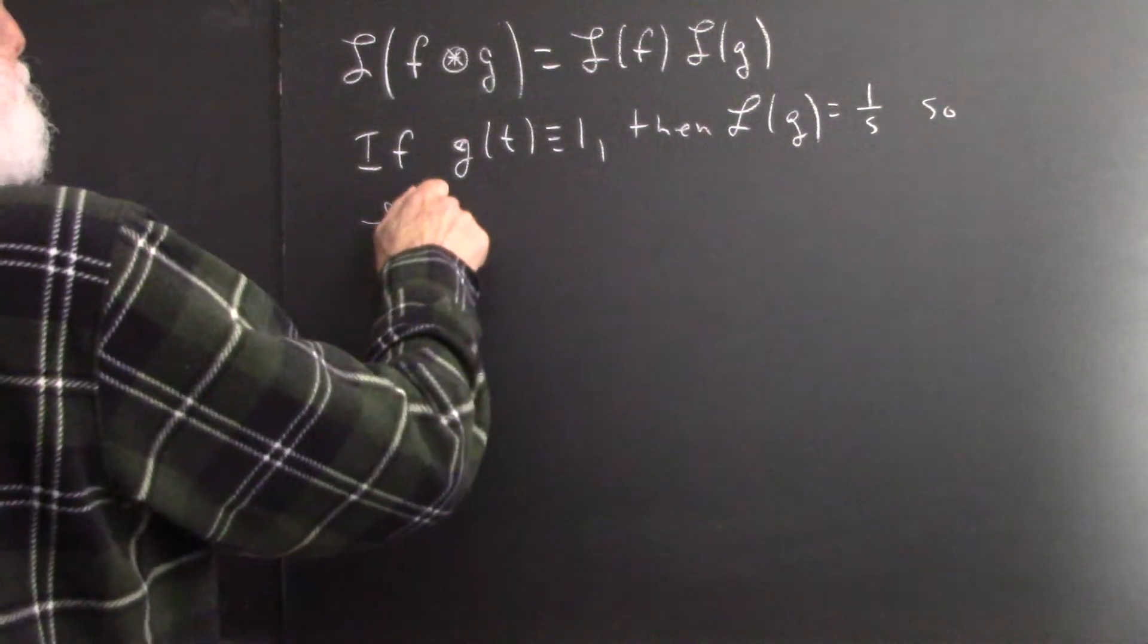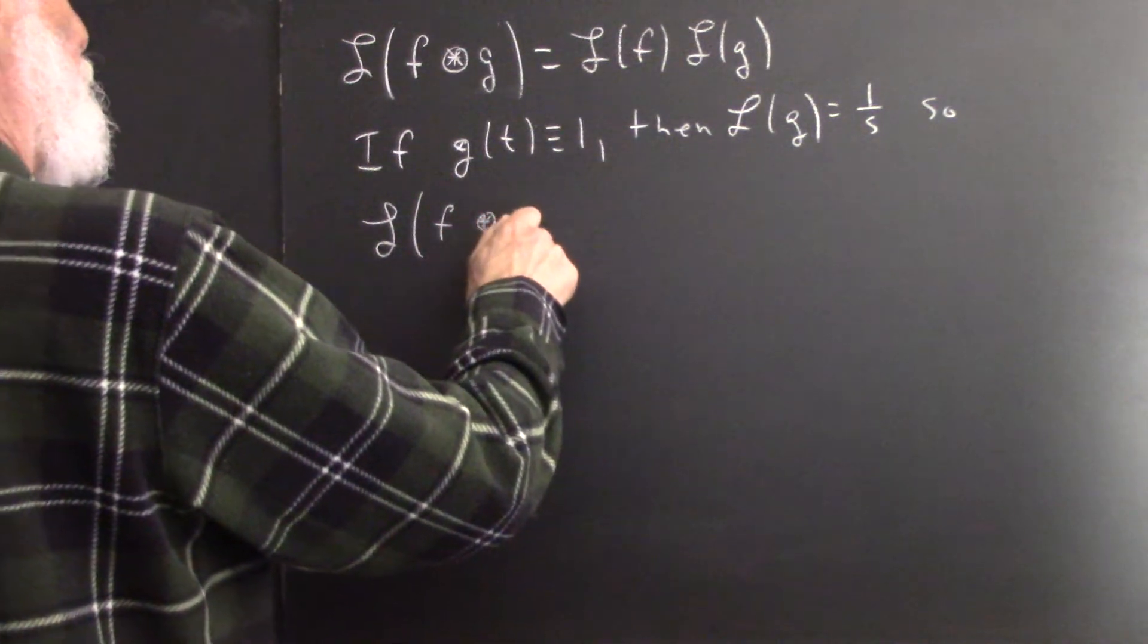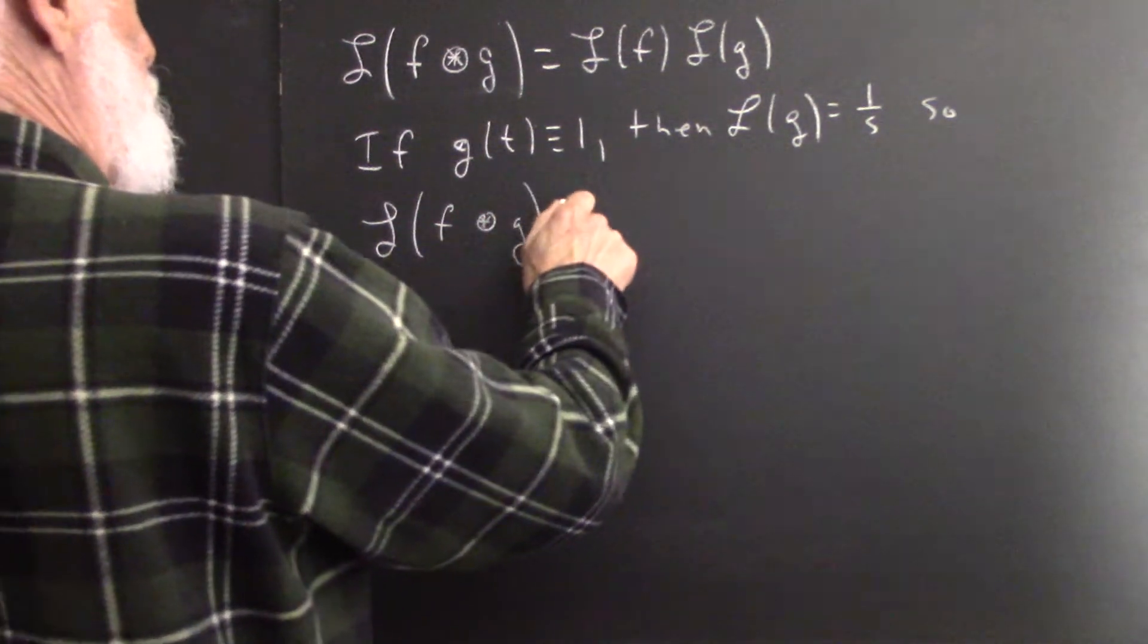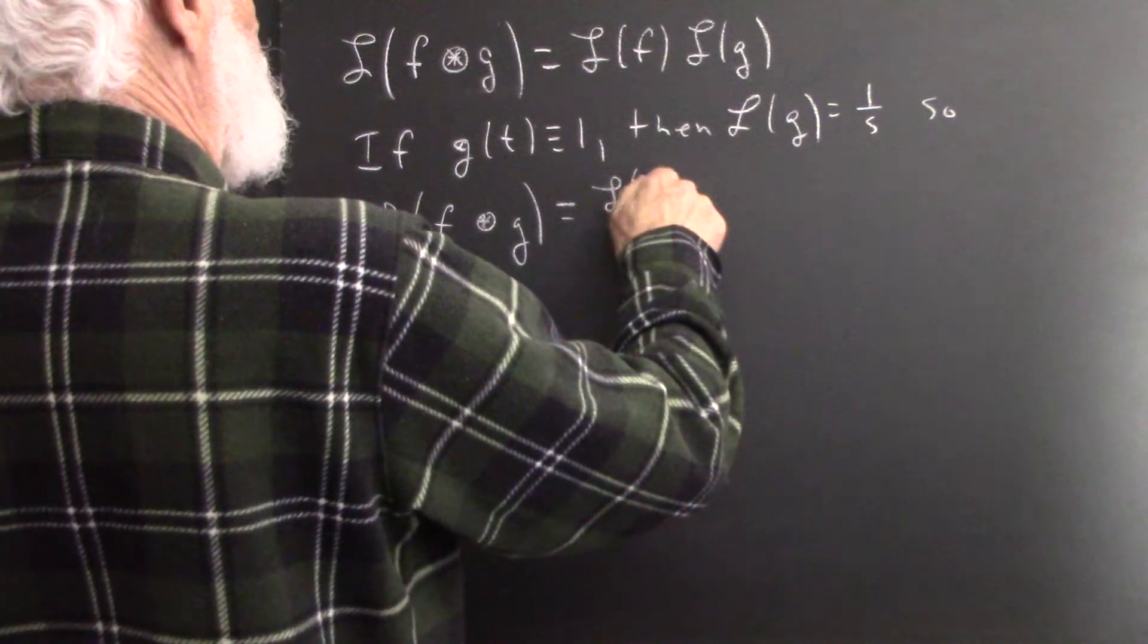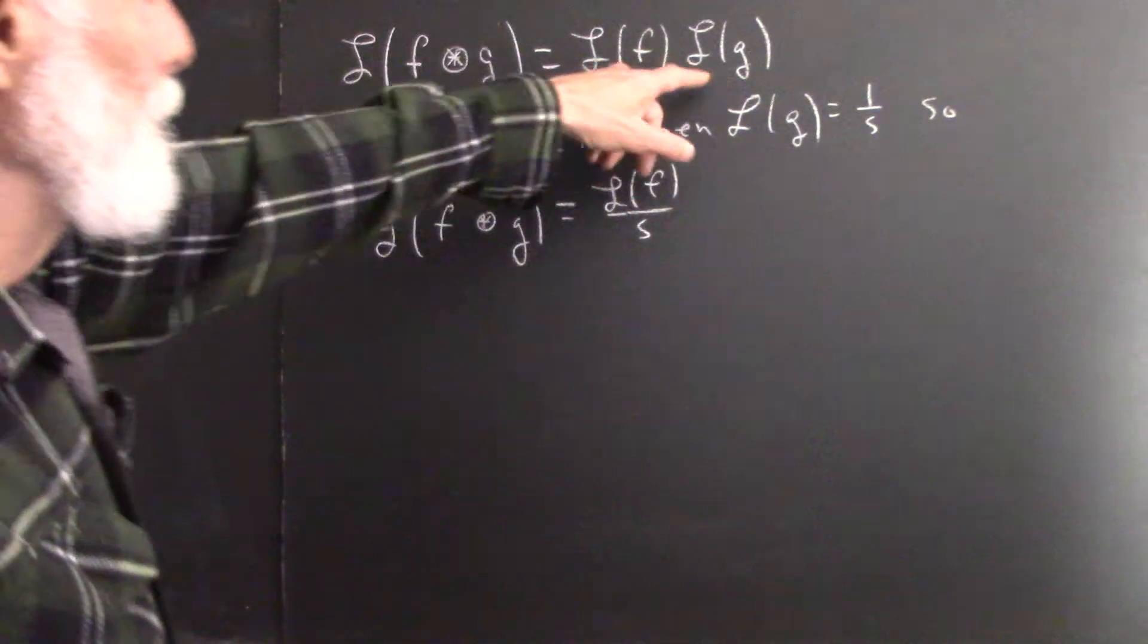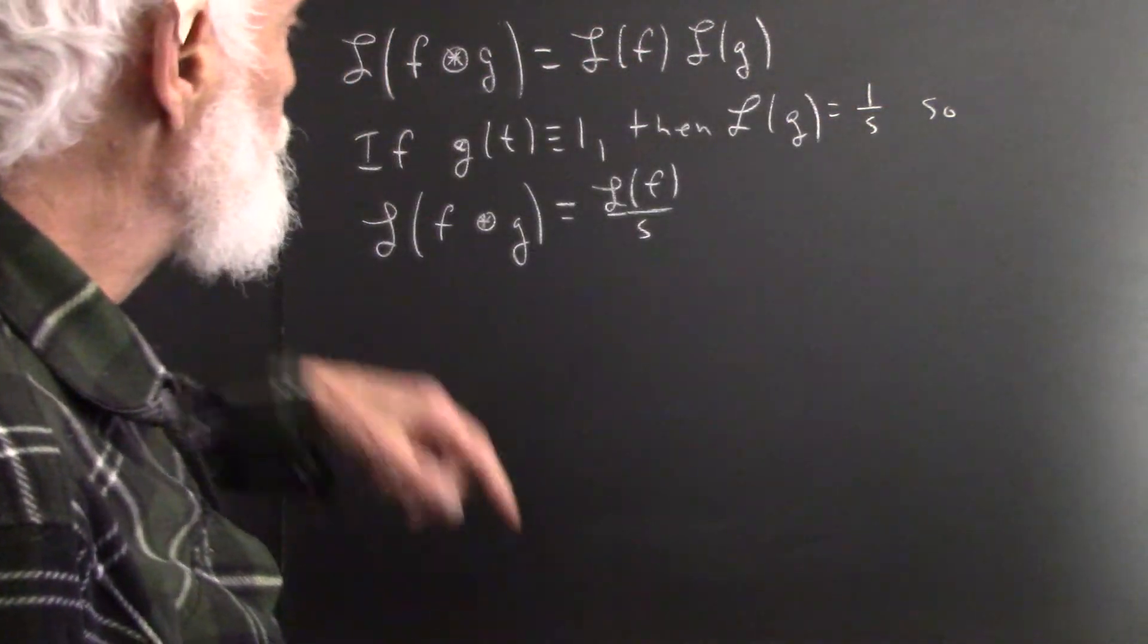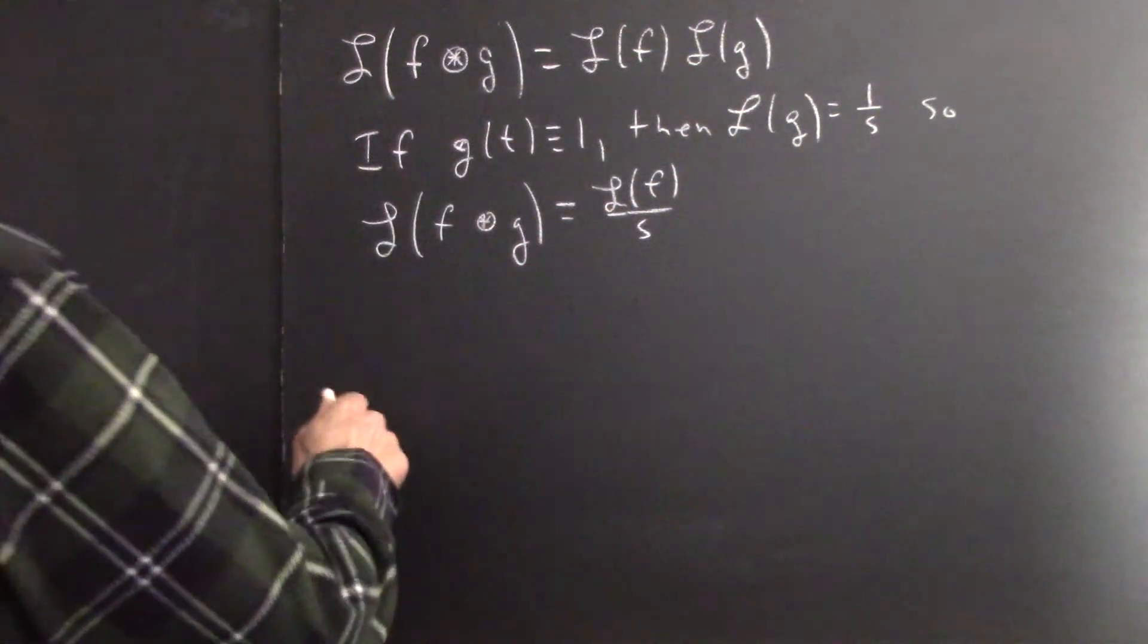So the Laplace transform of the convolution of f with g is the Laplace transform of f times the Laplace transform of g, which is 1 over s. So we write that as the Laplace transform of f over s.